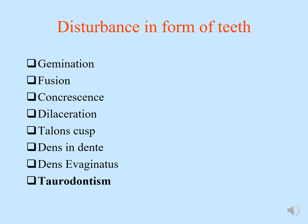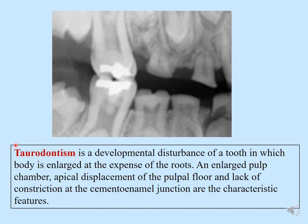The last disturbance in form is taurodontism. Taurus means bull and dontism means teeth, so this is a developmental disturbance where the teeth appear like bull teeth. Taurodontism is a developmental disturbance in which the tooth body is enlarged at the expense of the roots — you have short roots but large crowns. An enlarged pulp chamber, apical displacement of the pulp chamber floor, and a lack of constriction at the cemento-enamel junction are characteristic. Most taurodontisms are isolated; if multiple teeth are affected they are associated with syndromes such as Klinefelter syndrome.